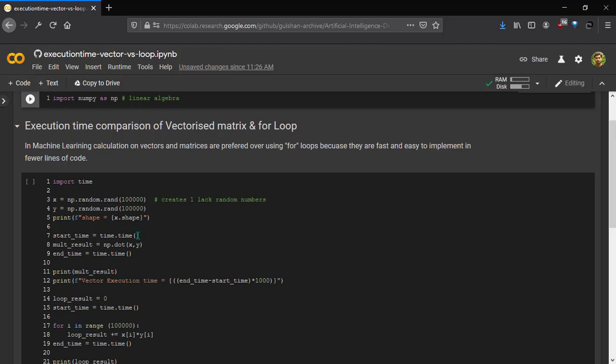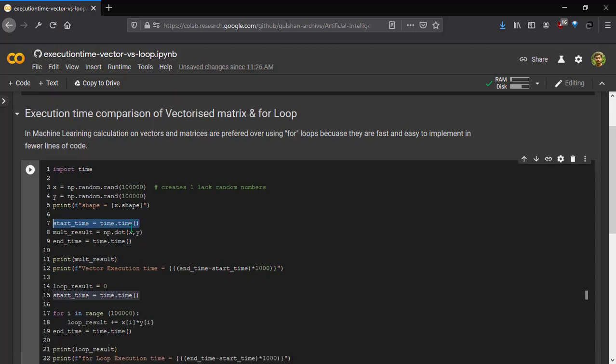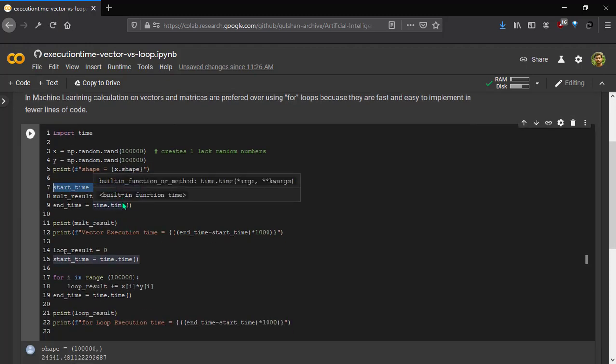Now get the start time using this API. Perform the dot operation using np.dot method and get this multiply result. And get the end time. Now since we get the start time as well as the end time, when we get the difference end time minus start time, we get the total execution time required in vector operation.